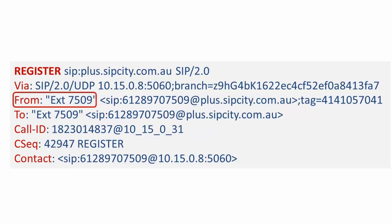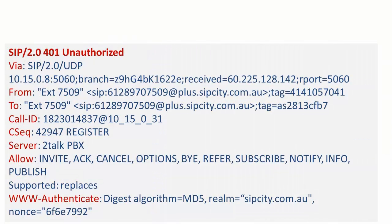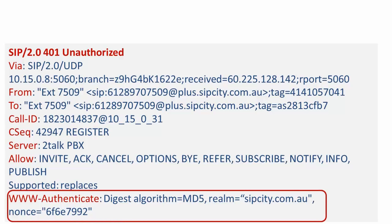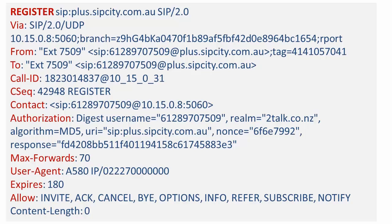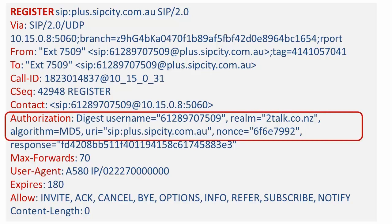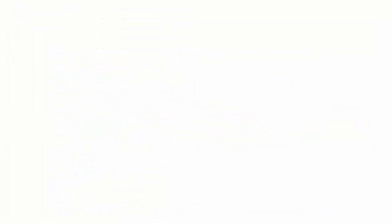Next is the 401 Unauthorized with our challenge for credentials, which you'll return in the valid response. The only difference in the second register is we now see the credentials within the authorization section — the username or digest — and the encrypted password. At this point, we're ready to register the device on our side and return with the OK response to the phone.